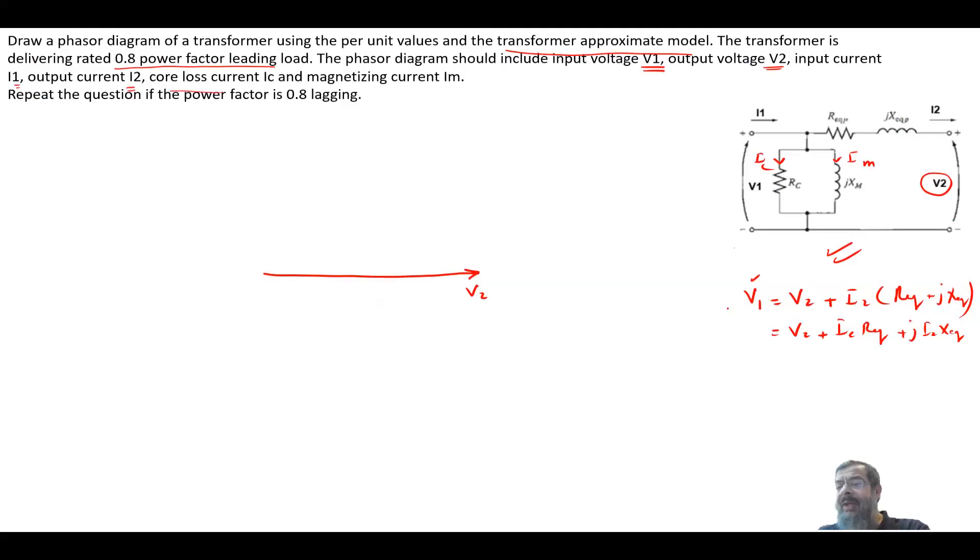The second equation from KCL is I1 equals IC plus IM plus I2. Now, I2 is for leading power factor, so I2 will have an angle of cosine inverse of 0.8, which is 36.9 degrees. Because it's leading, the current angle will lead the voltage angle.